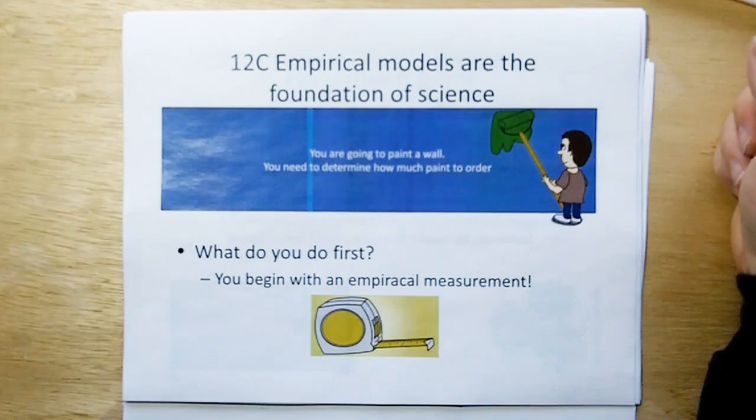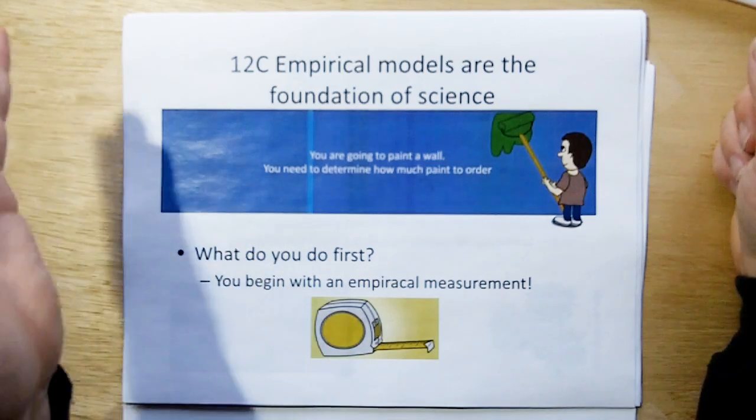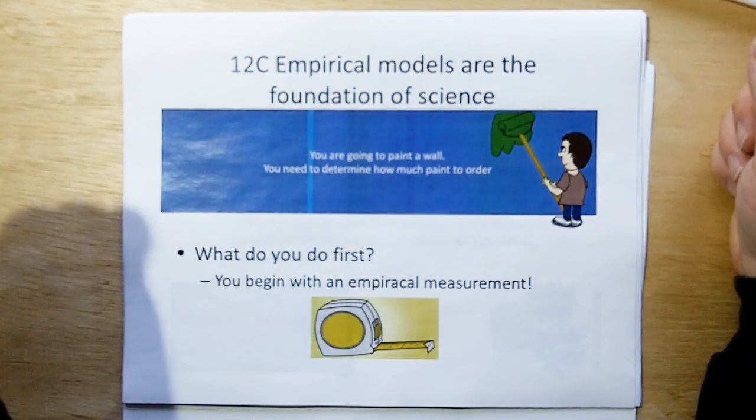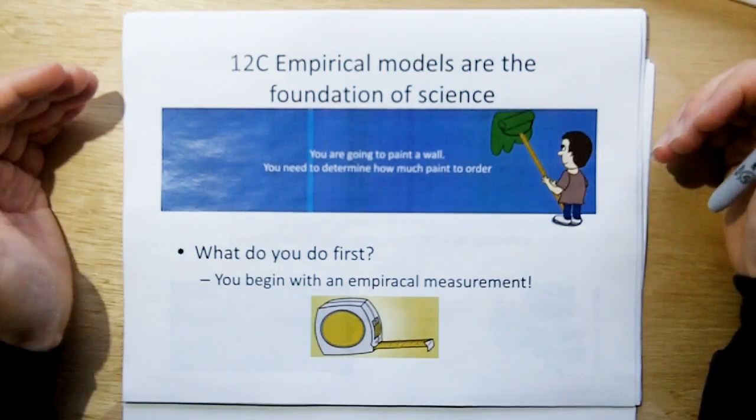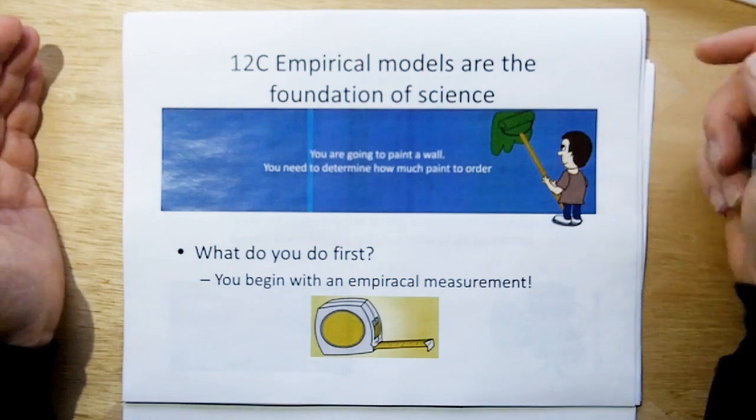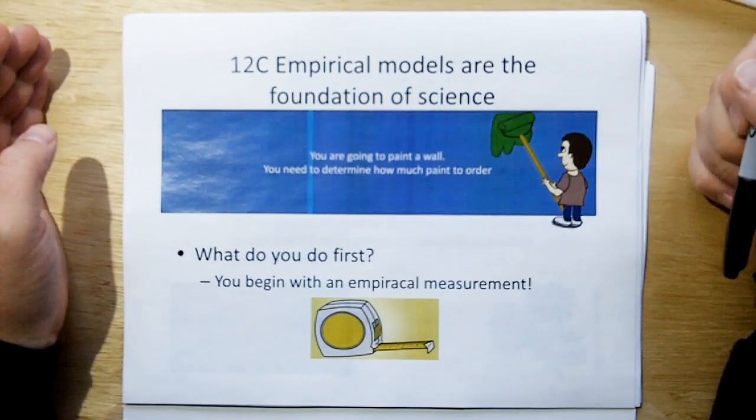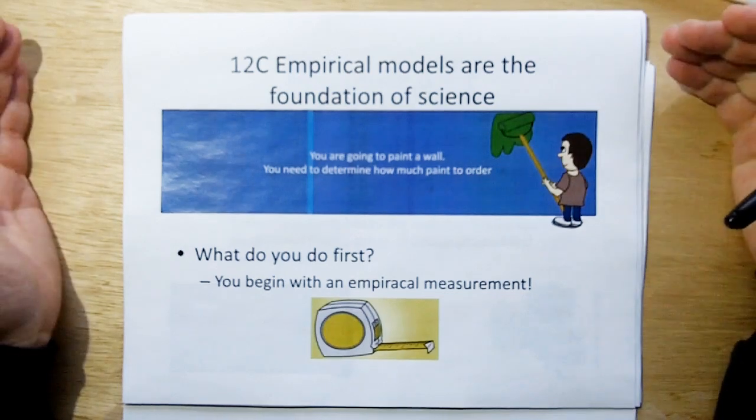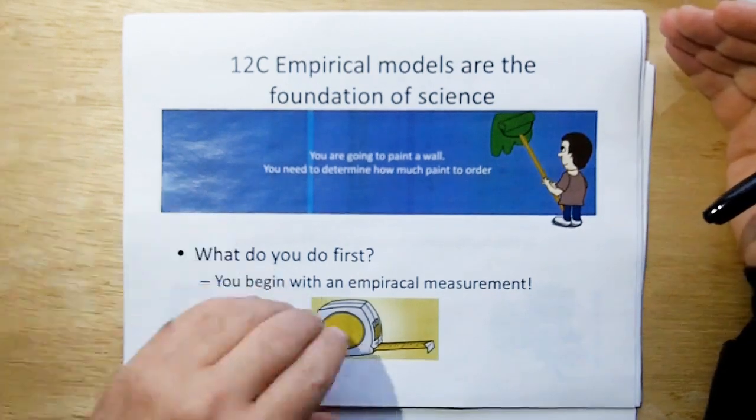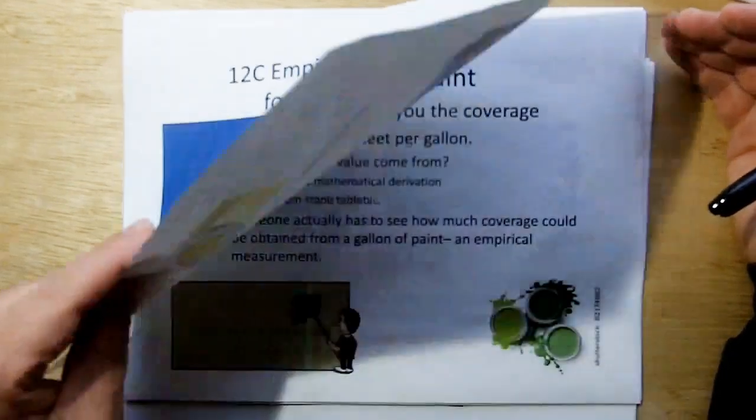And one thing we have to remember as scientists is that empirical models are the foundation of science. And what I'm going to explain to you is to use an example of trying to paint a wall. So you say you're going to paint a wall. How do you determine how much paint to order? Well, what you do is you get your tape measure up, and you measure the square area of the wall. And that's an empirical measurement right there. But it's based on an arbitrary rule of what a unit of length is.